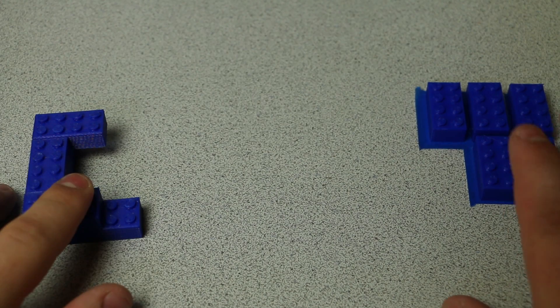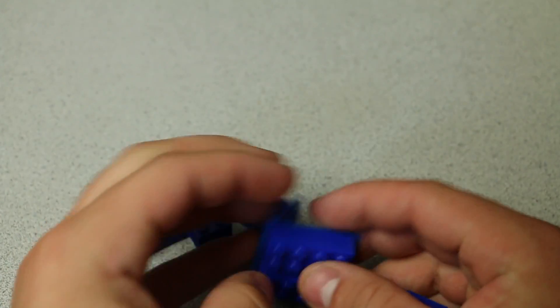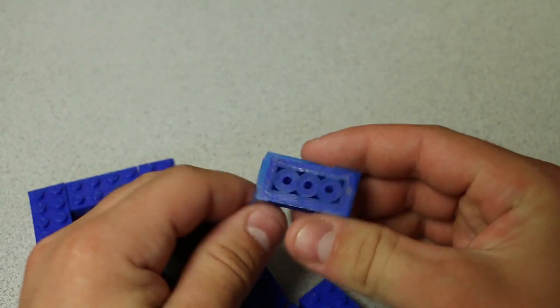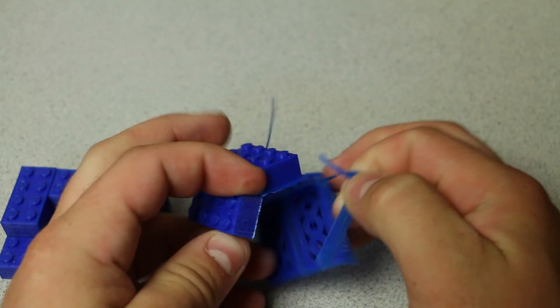All right, the Legos have finished printing. Here they are. Here's the unclean models. If you look at them here, you can see that they have this edge around them. So this is what the 3D printer does to keep parts from warping.